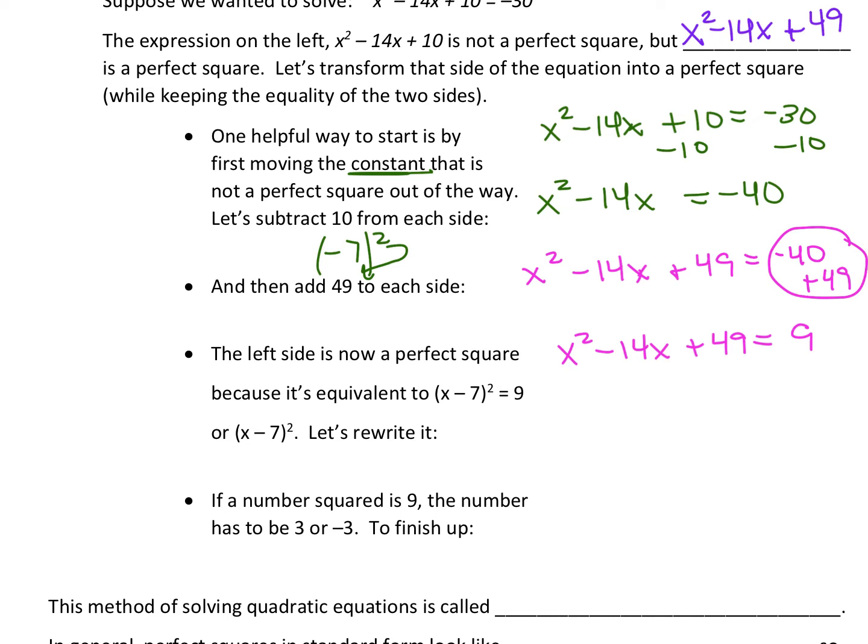Once you have this perfect square on the left side, let's go ahead and write it in factored form. Square root of 49 is 7. And we should be able to double that to get this 14. Because that's a negative 14, we actually want to use a negative 7. So we're going to have x minus 7 squared equals 9.